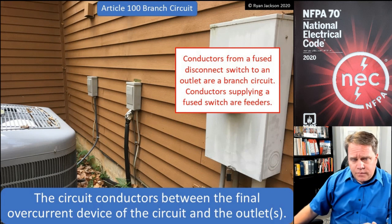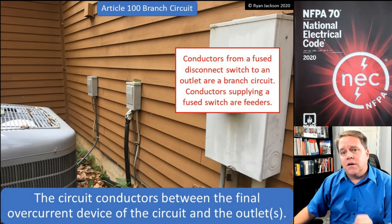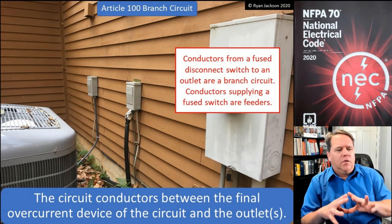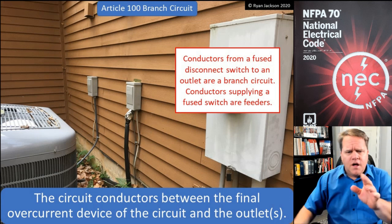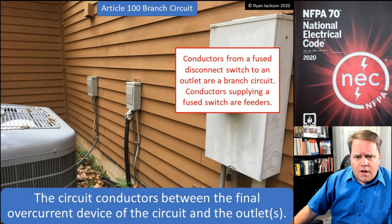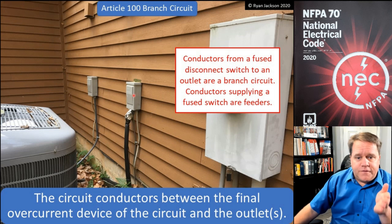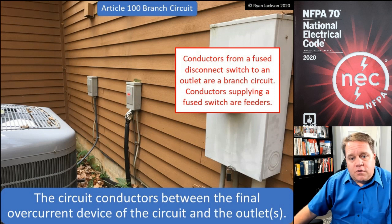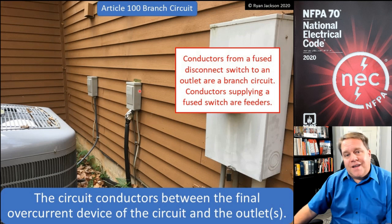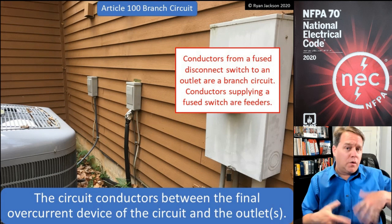A branch circuit is the circuit conductors between the final overcurrent device of the circuit and the outlets. It starts at the final overcurrent device — that's easy enough — it starts at the breaker or fuse. If these disconnecting switches contain overcurrent protection, if there are fuses or a breaker in there, then that would be the final circuit breaker or fuse of the circuit, and our branch circuit would start there and end at the outlet.